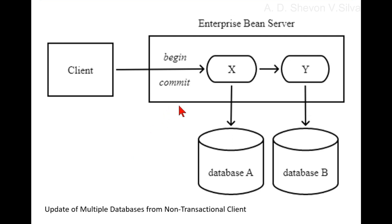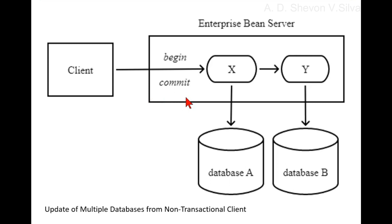The container behaves as follows: if the client request is not associated with a transaction context, the container automatically initiates a transaction whenever a client invokes an enterprise bean method that requires a transaction context. If the client request contains a transaction context, the container includes the enterprise bean method in the client transaction.